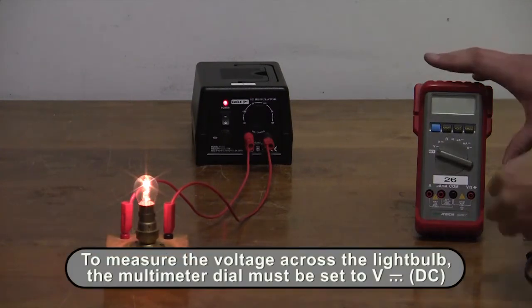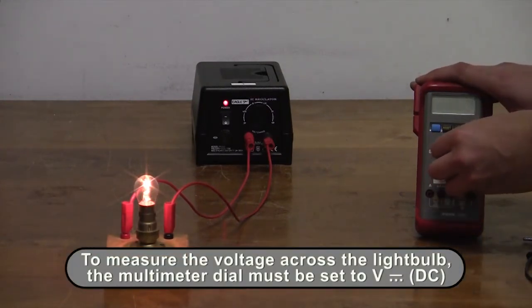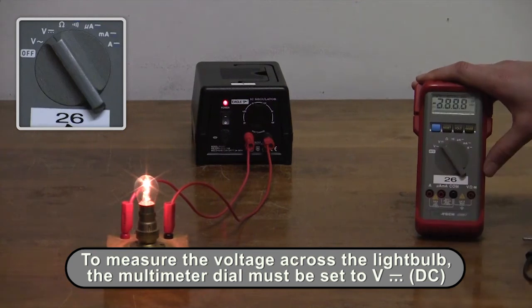Now we will look at measuring the voltage across the lightbulb. The multimeter can measure voltages of both alternating and direct current. For this example, we will use the direct current mode.